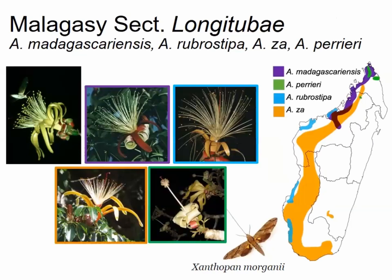Section Longitubae comprises four species united by an elongated staminal column and similar hawk-moth pollination. The species madagascariensis has red petals, though certain populations have yellow petals — important for later. Rubrosstippa is classic to the spiny forest with understudied northwest populations. Za is found widespread across the island. Perrieri is the most endangered with fewer than 200 trees left, found in subhumid forests of the north and pollinated by Xanthopan morganii — Darwin's hawk moth.